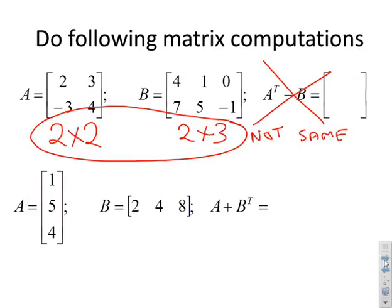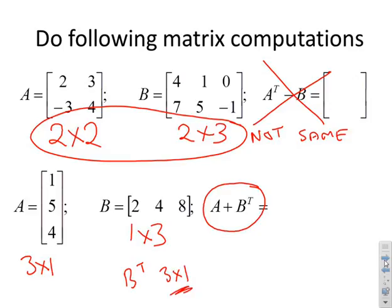However, if you look at the case down here, A is 3 by 1 and B is 1 by 3. You might be saying I've got a problem, but you've been asked to do A plus B transposed. B transposed is going to be 3 by 1, so now they will have the same dimensions. If I add A to B transposed, I'll get 1 plus 2 is 3, 5 plus 4 is 9, and 4 plus 8 is 12.